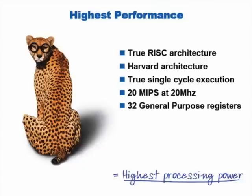Designers can continue to write in C and let the C compilers translate code. Moving forward, its single-cycle execution at 20 MHz yields 20 MIPS. One of the neatest things when you talk about performance is the 32 general-purpose registers that are on board each AVR.